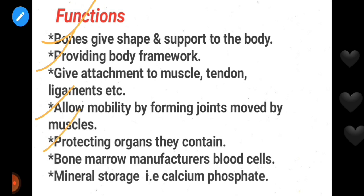Bones protect the organs they contain. For example, the skull and vertebral column protect the brain and spinal cord respectively. Also, bone marrow manufactures blood cells — red blood cells, white blood cells, and platelets are produced in bone marrow.